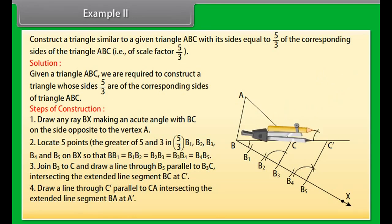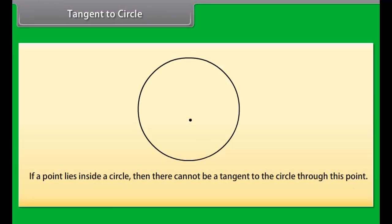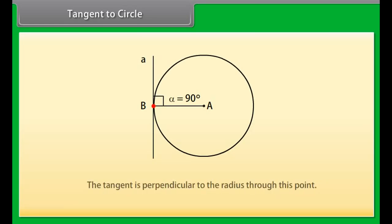Join B3, the third point, 3 being smaller of 3 and 5 in 5 by 3, to C and draw a line through B5 parallel to B3C intersecting the extended line segment BC at C'. Draw a line through C' parallel to CA intersecting the extending line segment BA at A'. Then A'BC' is the required triangle.